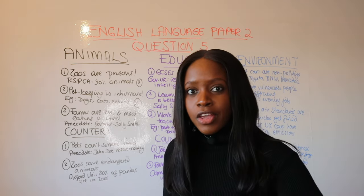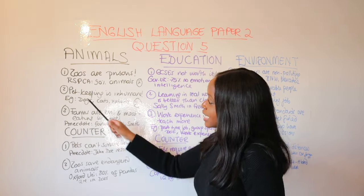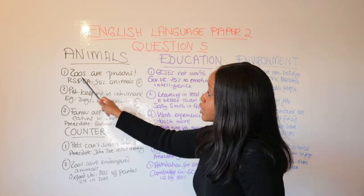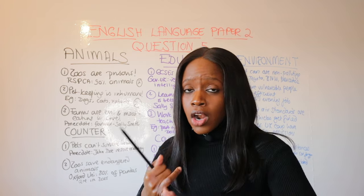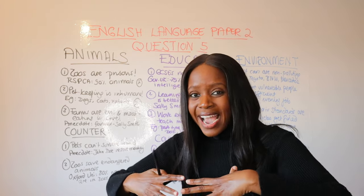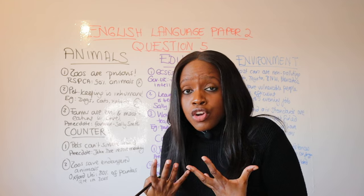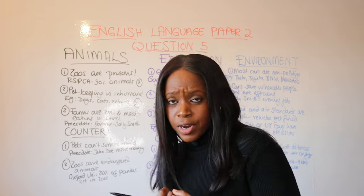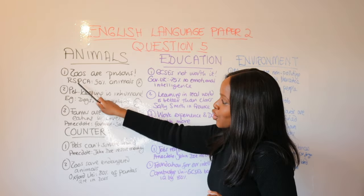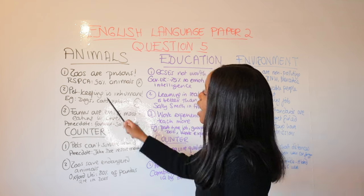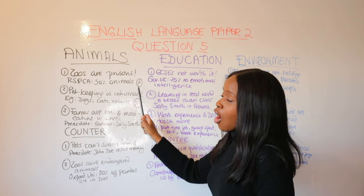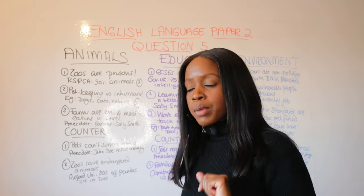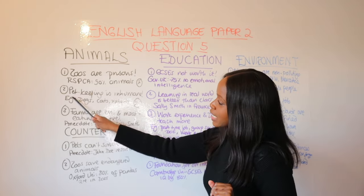The first point you can make on animal welfare is that zoos are really bad — they are prisons for animals. You can use a made-up statistic: the RSPCA found that 90% of zoo animals are suffering from some kind of depression because they are taken out of their natural habitat. This is a strong opening argument against zoos.